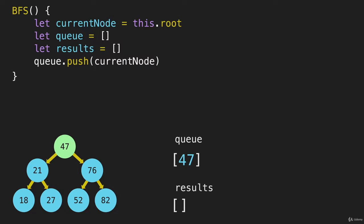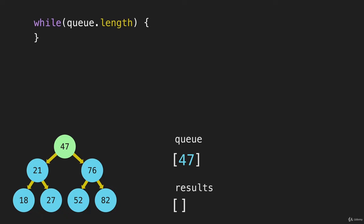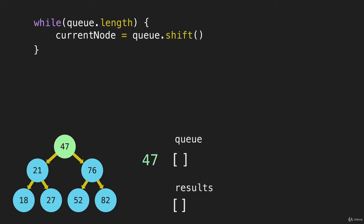Now we'll start our while loop, and we'll say while queue dot length — in other words, while the queue has length, or while the queue has a length greater than zero — because once this is zero, that'll equate to false. I'm just gonna focus in on this while loop as we build it out. We'll say current node equals queue dot shift. When we shift this out of the queue, that makes that the current node.